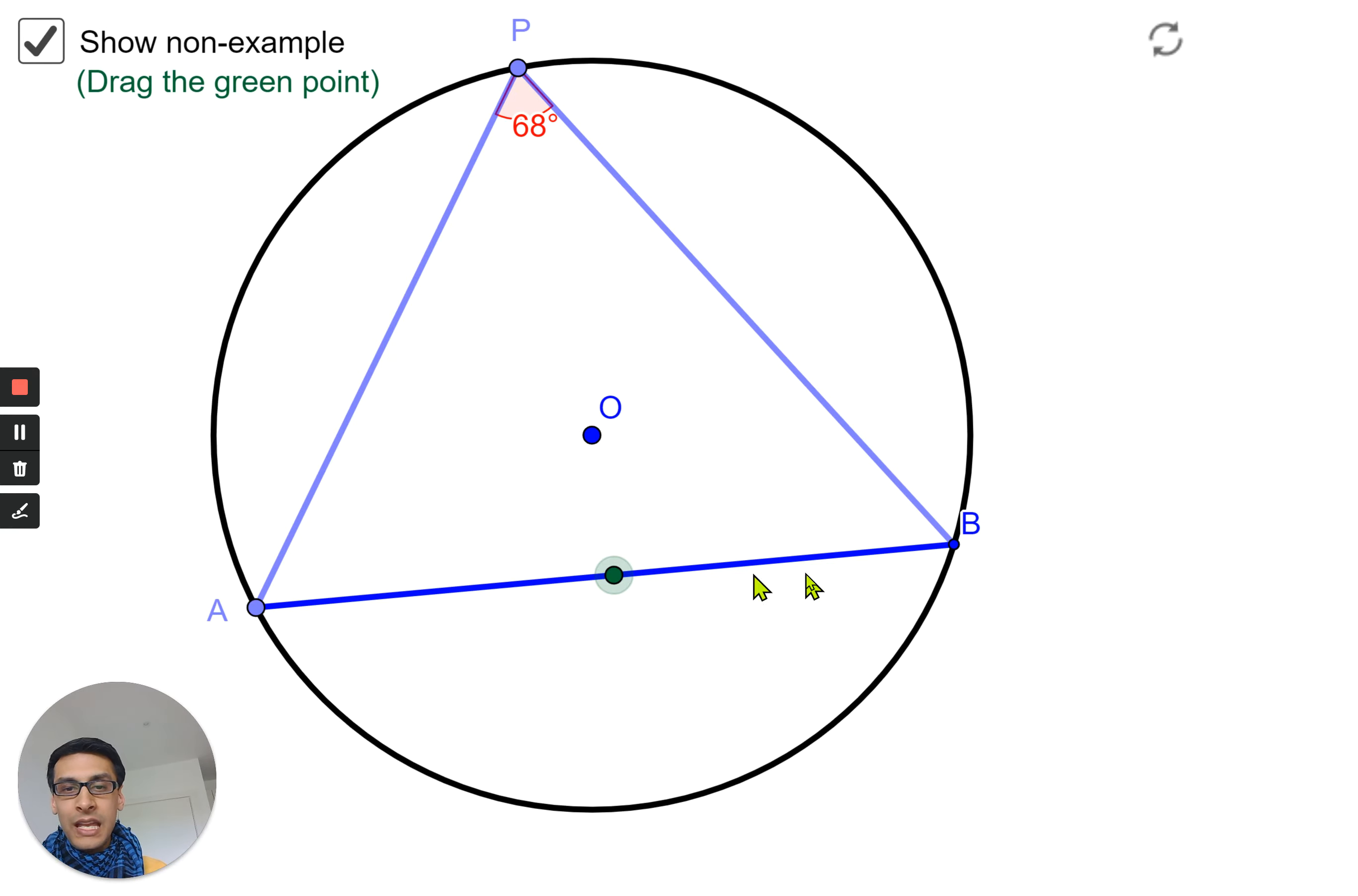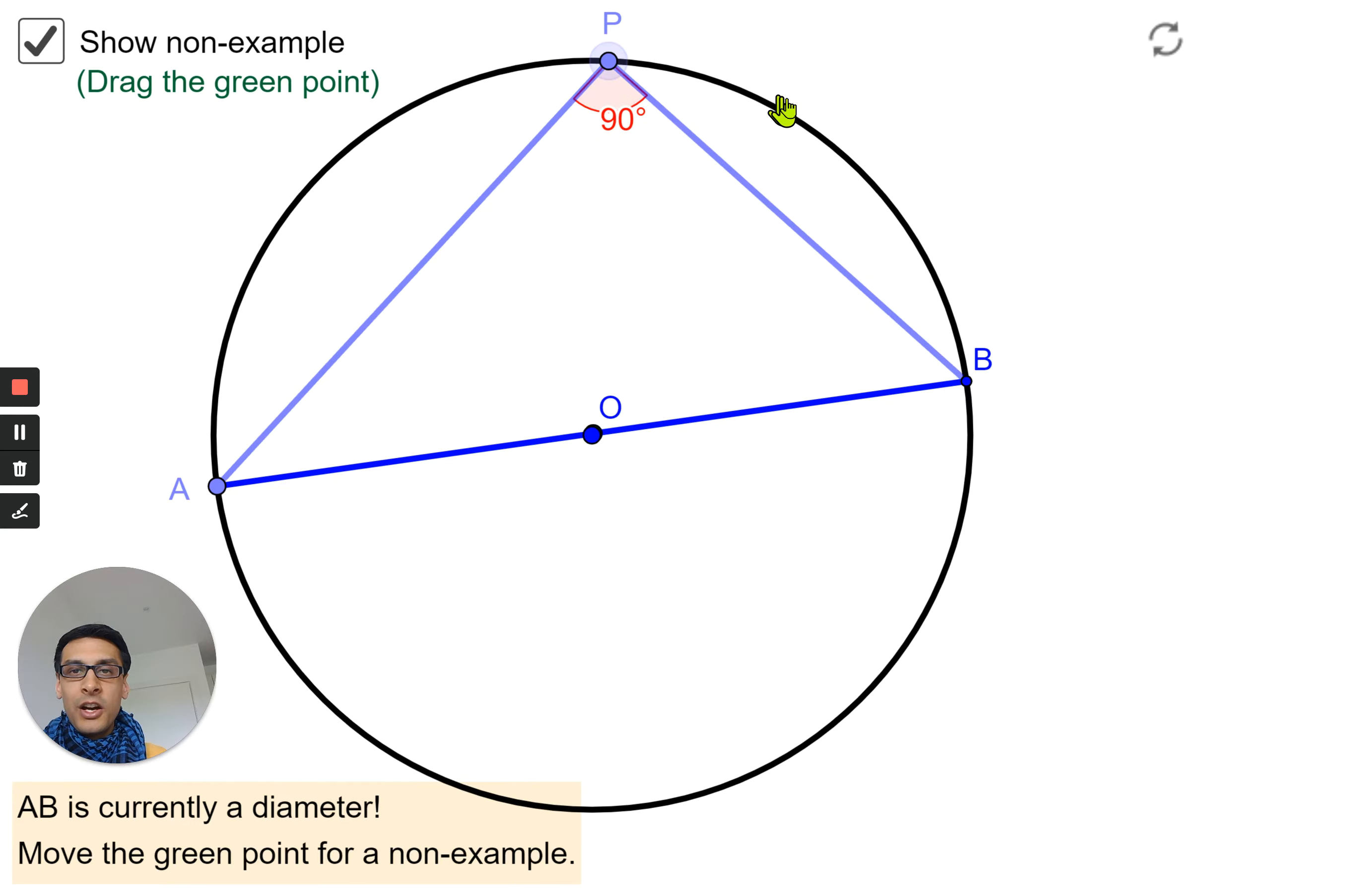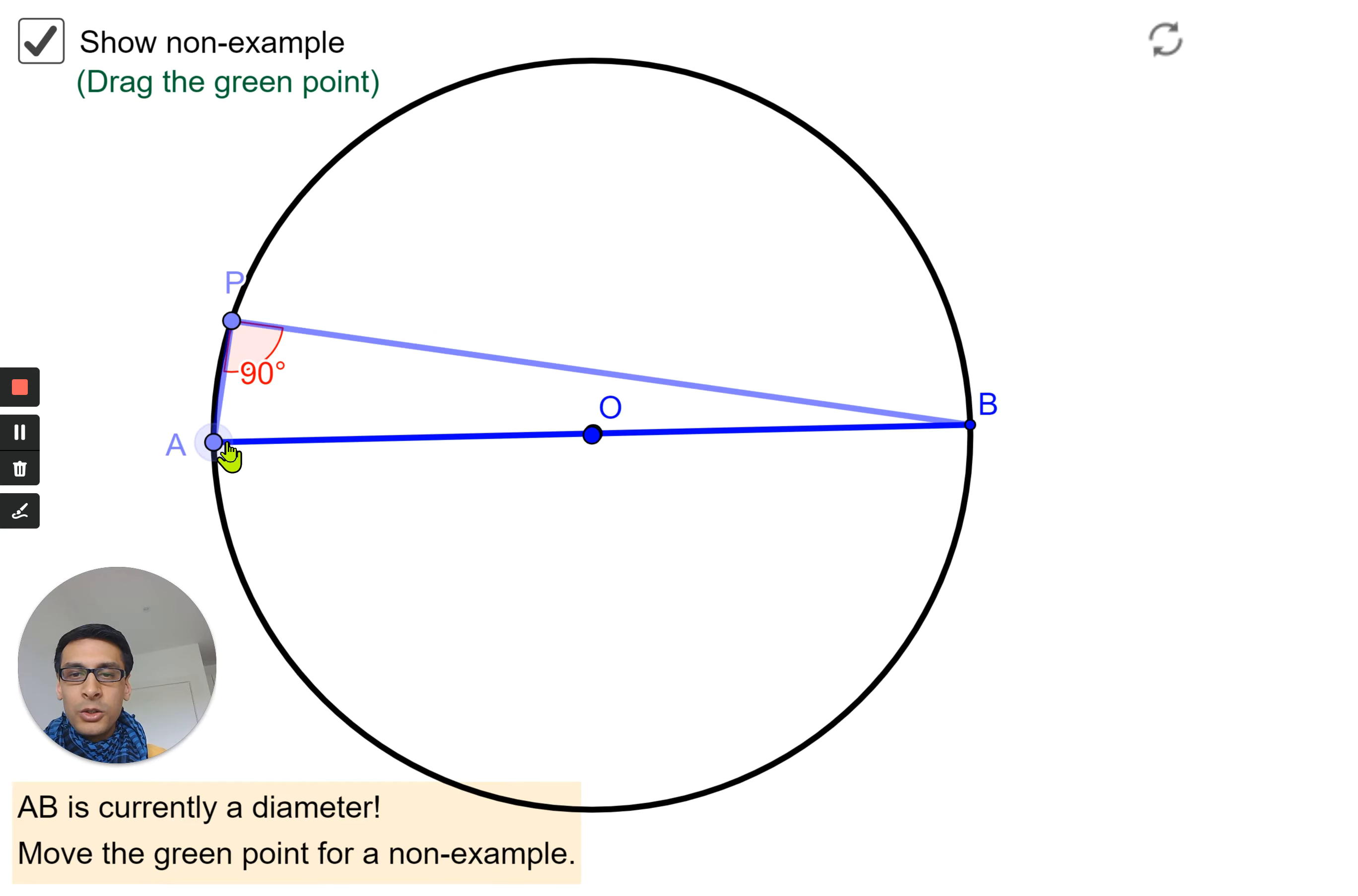Obviously you can see that this line AB no longer splits the circle into two semicircles; it's actually just two segments. If it does happen to line up with the diameter, you end up with a 90 degree angle no matter how this moves around.